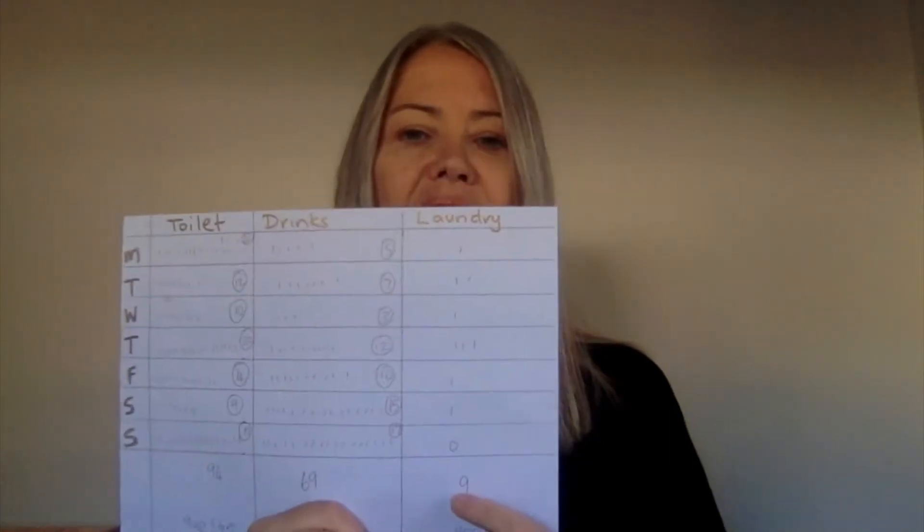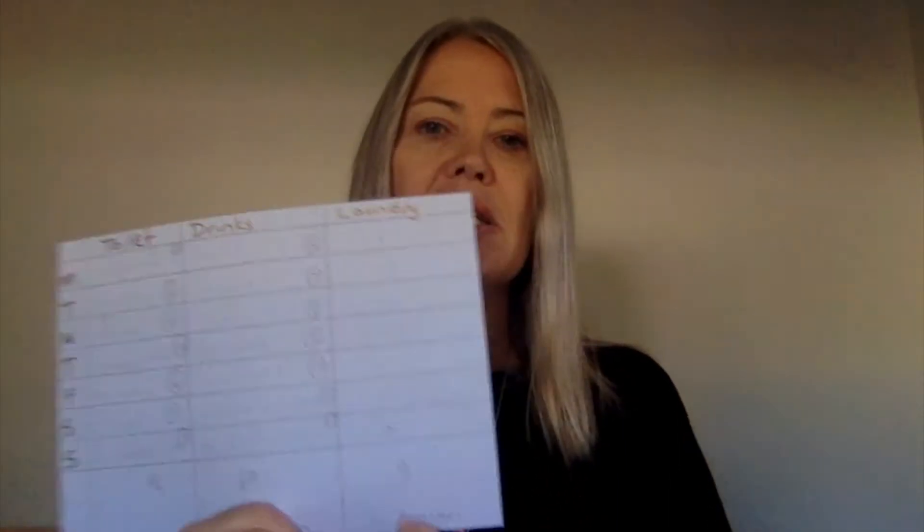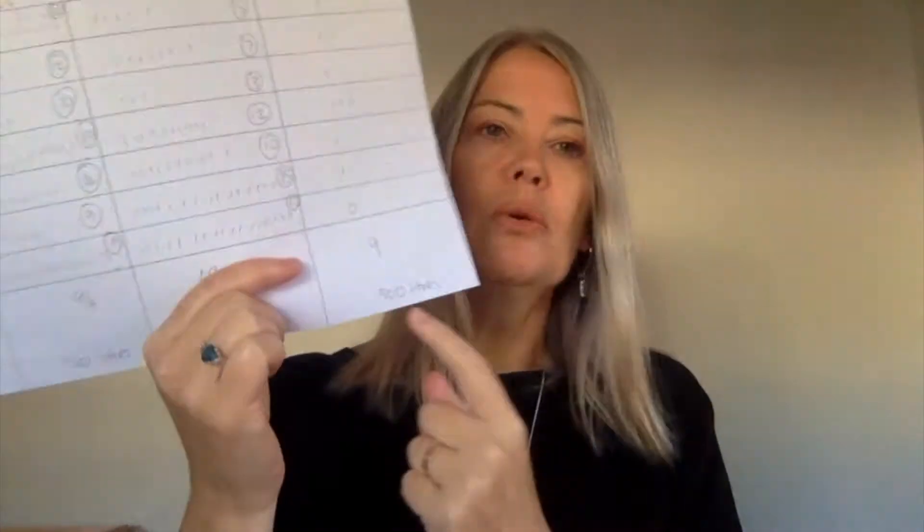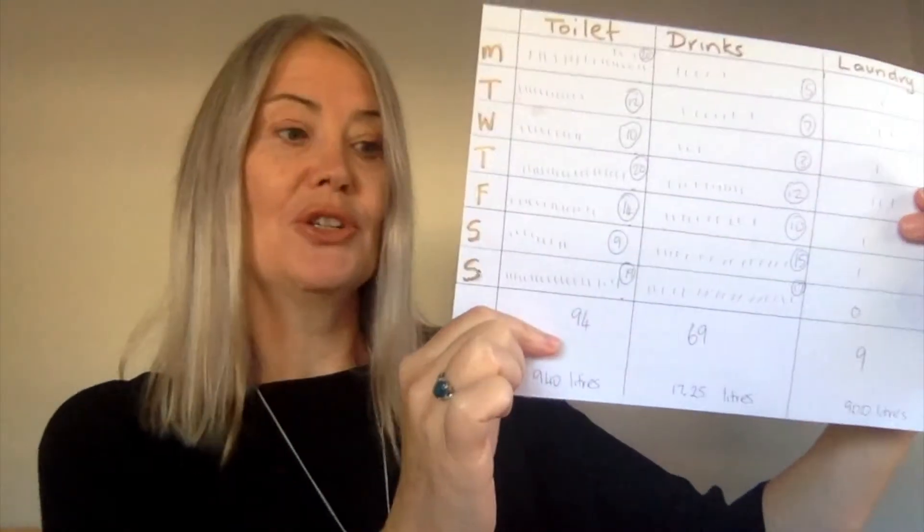For the laundry, once you've totaled it, multiply it by 100 liters. For example, if there were nine loads of laundry done in one week, that equals 900 liters. In my example, 94 flushes of the toilet equals 940 liters.